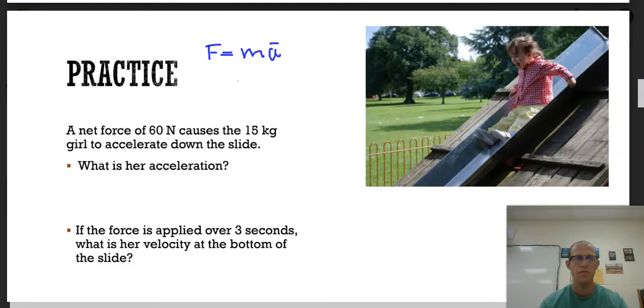Force equals mass times average acceleration. A net force of 60 newtons causes the 15 kilogram girl to accelerate down the slide. What is her acceleration? So we have a net force of 60 newtons equals the mass of the girl, 15 kg, times average acceleration. To find acceleration, we'll divide the 15 over, which gives us 4 meters per second squared.